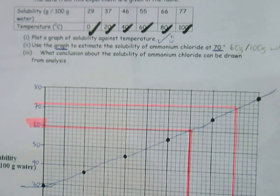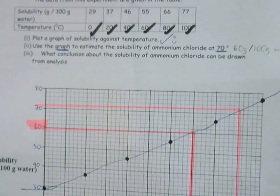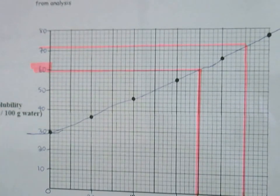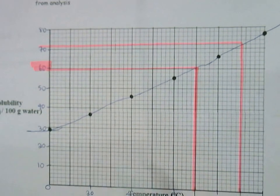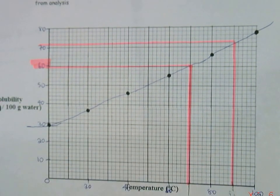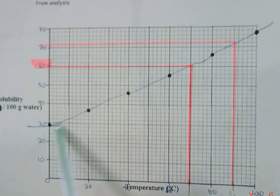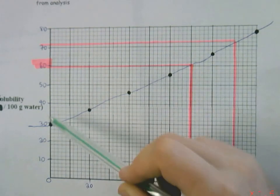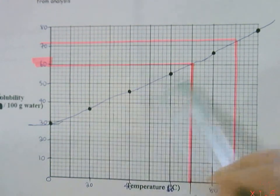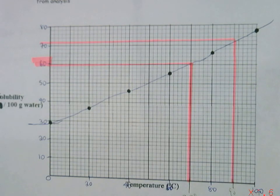The very last part then is: what conclusion about the solubility of ammonium chloride can be drawn from your analysis of the graph? If we look at the graph, basically just describe what's happening each time. We'd use the two words that we're given in the graph: solubility and temperature. If you look carefully, we can see that as the temperature goes up—20, 40, 60, 80, 100—and as it goes up, so is our solubility. So as temperature increases, solubility increases. That would be our conclusion.